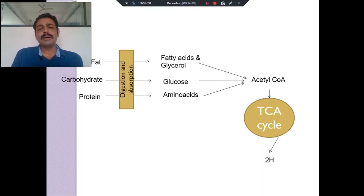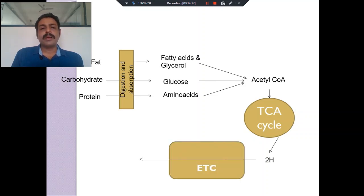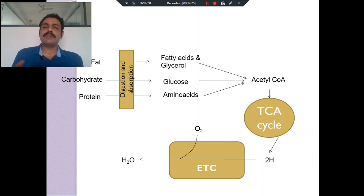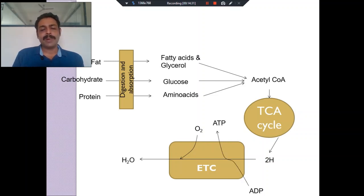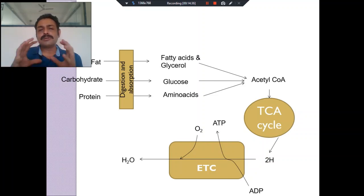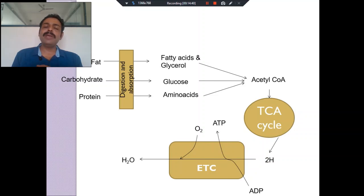Secondary metabolism is also called intermediary metabolism. What is tertiary metabolism? These two hydrogen atoms enter the electron transport chain, combine with oxygen to form water, and in this mean process energy is liberated. This is called tertiary metabolism. In this process, energy is used to combine ADP and phosphate so that ATP will be formed.